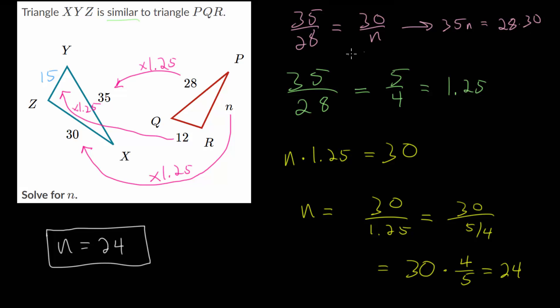And from here, it's just simplified. We divide by 35. And we end up with the same numbers that we got below. So it would be 28 times 30 over 35.